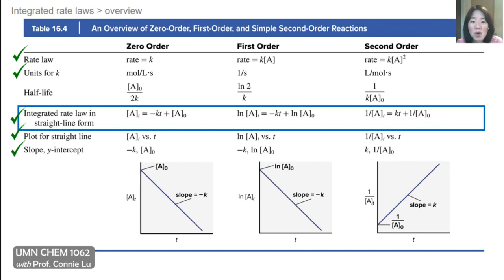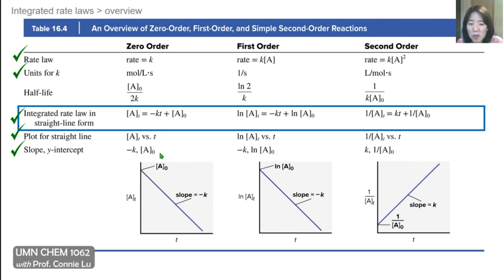Coming back to this overview table, we have now covered the integrated rate laws for zeroth order, first order, and second order reactions. Hopefully by now these plots and the concept of what their slopes and y-intercepts are all make sense.